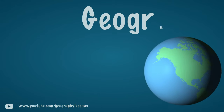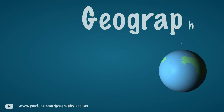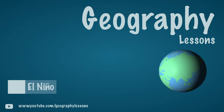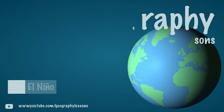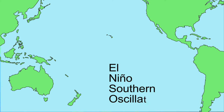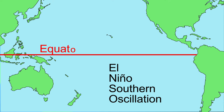In this video El Niño will be explained, a fluctuating weather pattern in the area around the equator in the Pacific. The full name of El Niño is ENSO, El Niño Southern Oscillation. Southern Oscillation means that there is a weather fluctuation in the Southern Hemisphere which is called El Niño.